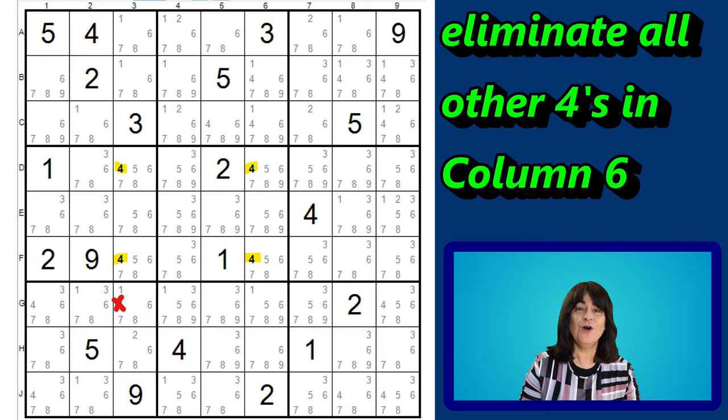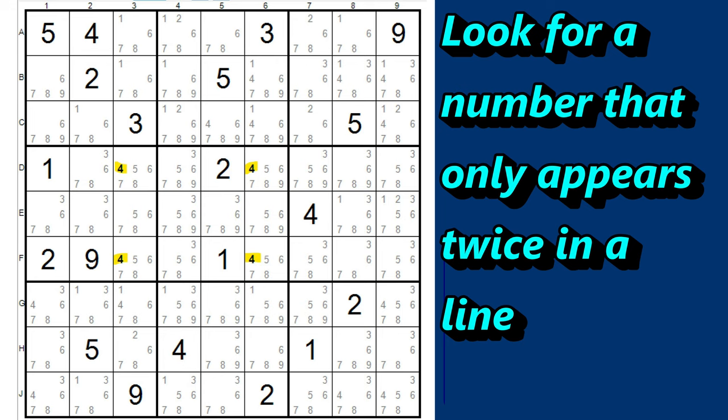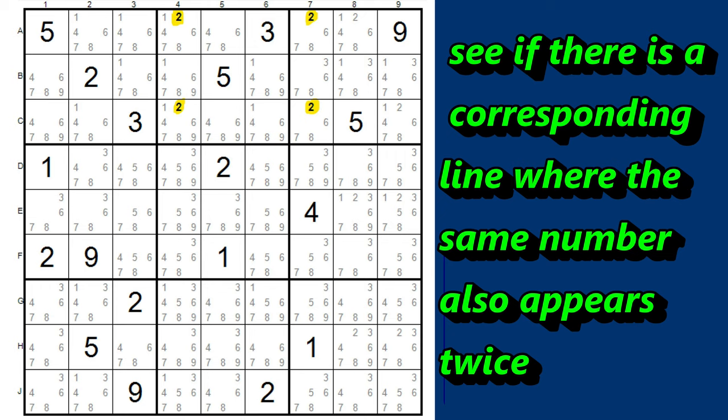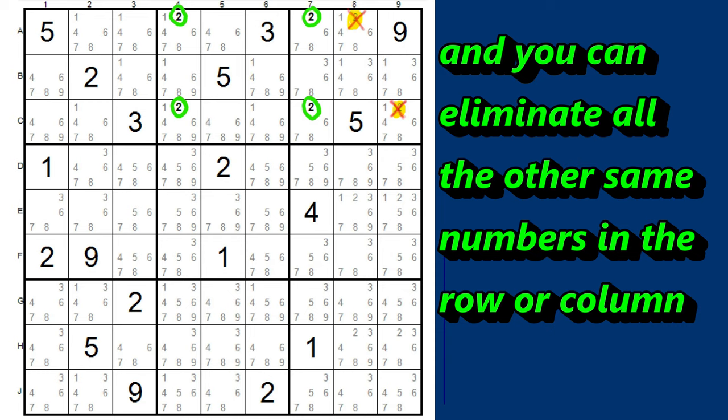So how do you spot this X-wing pattern? The trick is to look for a number that only appears twice in a line, either a row or a column, and then look to see if there's a corresponding row or column where that same number also appears twice. If the 4 cells form a rectangle, then you have an X-wing pattern, and you can eliminate all the other same numbers in the row or column.